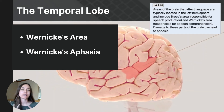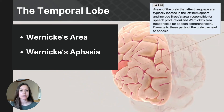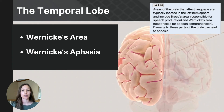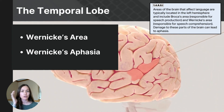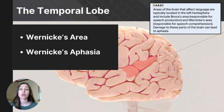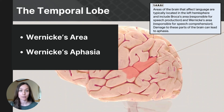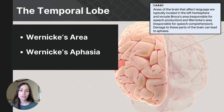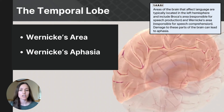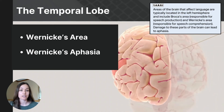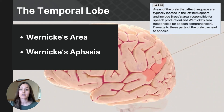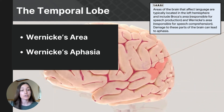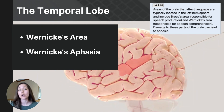Inside the temporal lobe is a small but very important region called Wernicke's area — a highly specialized region near the intersection of the temporal and parietal lobes. Like Broca's area, Wernicke's area can only be found in the left hemisphere. It is primarily responsible for language comprehension, including the ability to understand both spoken and written language. Damage to this area results in Wernicke's aphasia, where individuals can produce fluent speech but it often lacks meaning, and they have significant difficulty understanding language.